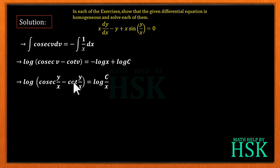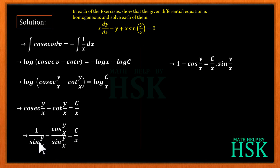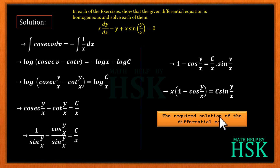Combining the log terms, we get cosec(y/x) minus cot(y/x) = c/x. Writing cosec(y/x) as 1/sin(y/x) and cot(y/x) as cos(y/x)/sin(y/x), and since sin(y/x) is in the denominator of both left-hand side terms, cross-multiplying gives 1 minus cos(y/x) = (c/x)·sin(y/x). Multiplying through by x, the required solution is x(1 minus cos(y/x)) = c·sin(y/x).